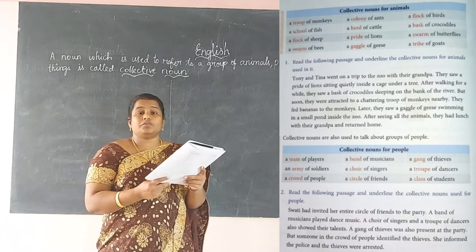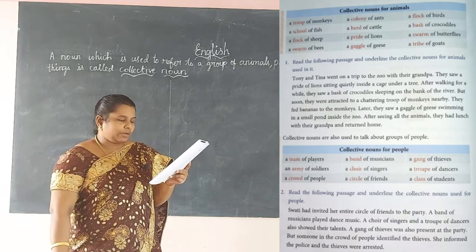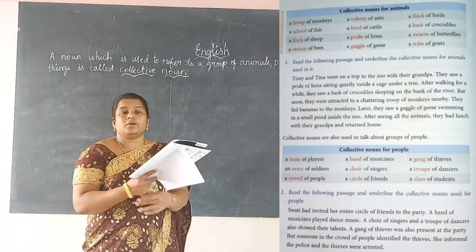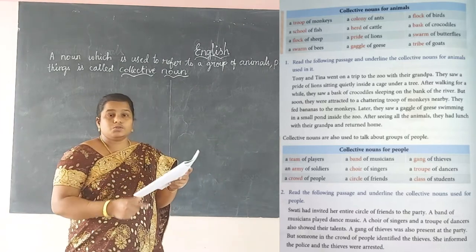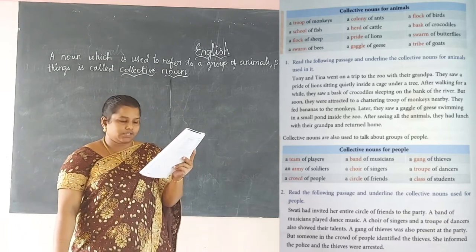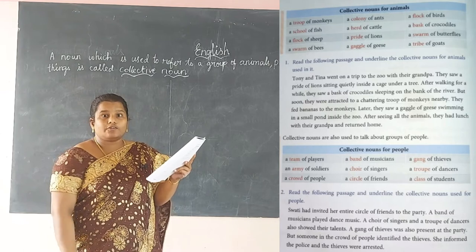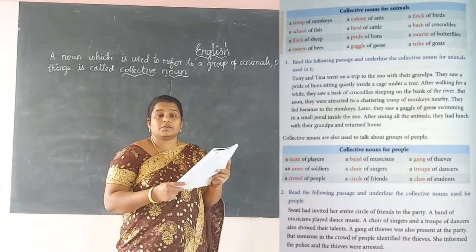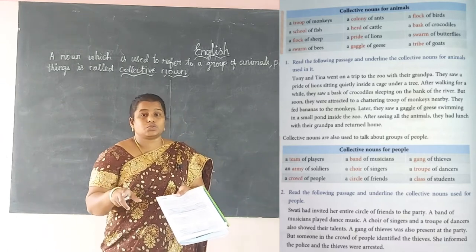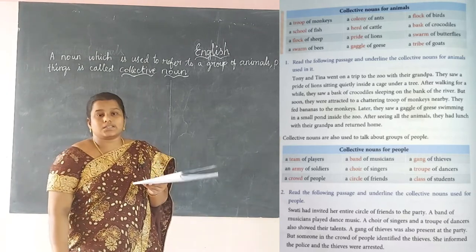Now we are moving to the collective noun for people. For players we use 'team'; for soldiers, 'army'; for people, 'a crowd of people'; for musicians, 'a band of musicians'; for singers, 'a choir of singers'; for friends, 'a circle of friends'; for thieves, 'a gang of thieves'; for dancers, we use 'troop.' For students, one student is 'student,' but a group of students sitting is called 'class of students.'